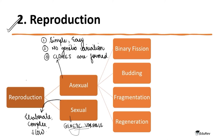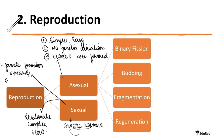Genetic variability happens in sexual reproduction because gamete formation takes place, then gamete fusion — that is syngamy — and finally zygote formation. Due to all these steps there is genetic variability in sexual reproduction.